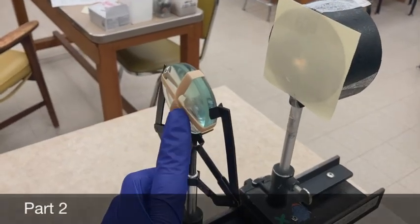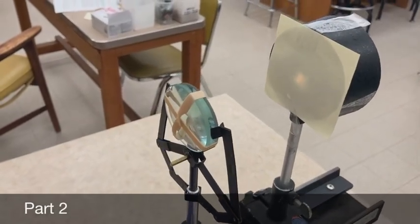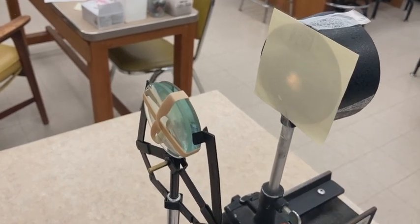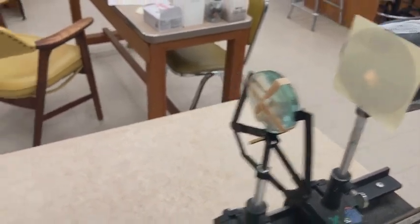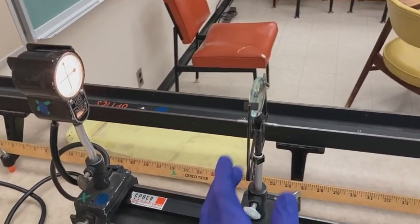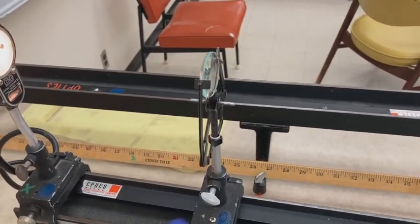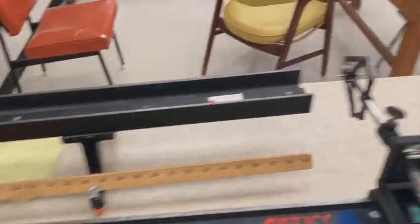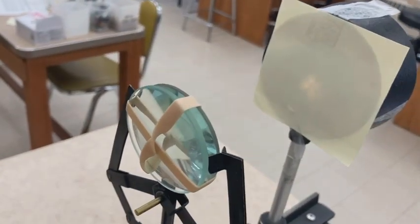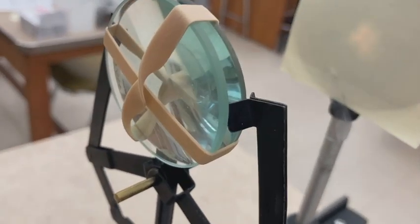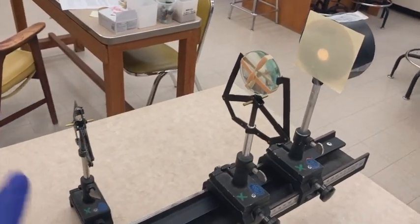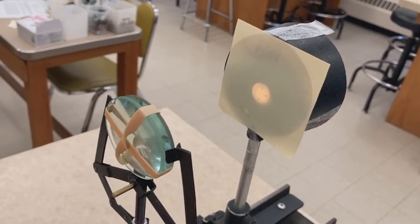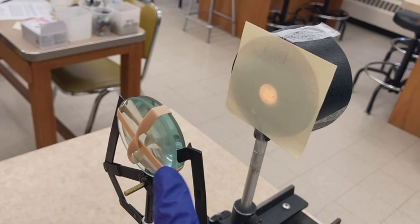For part 2, we have added a plus 3.5 diopter lens to represent accommodation. And you'll notice this image is no longer clear. To find the near point of the eye, we can simply remove this collimating lens and move this light source until we find a clear image. Now we've located the near point by finding a clear image on the retina. The object location for the fully accommodated eye that forms a clear image is the near point.